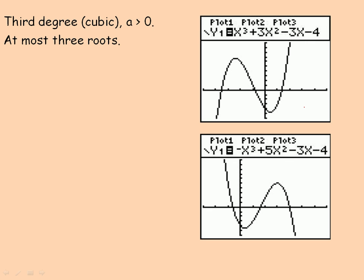If I were to draw an example of one that crosses in two places, it might look something like this — it crossed like this, came down, and just touched before it went back up again. So there's only one root here and one root there, so it only has two roots. It could also come back down but never touch the x-axis again and go up again, so it would have one root. It does have to have at least one root; there's no way to draw it so it has no roots whatsoever.